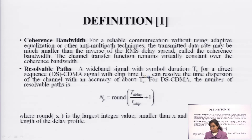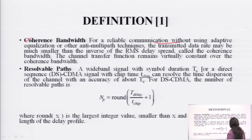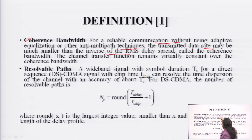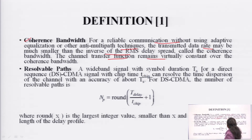Next are some definitions used to characterize small scale fading. The first one is coherence bandwidth. For reliable communication without adaptive equalization or other anti-multipath techniques, the transmitted data rate may be much smaller than the inverse of the RMS delay spread. RMS means root mean square value calculated from the delay spread. The channel transfer function remains virtually constant over the coherence bandwidth.